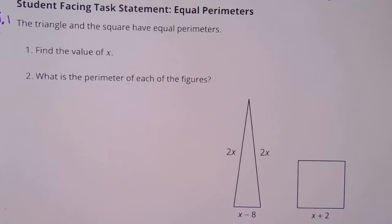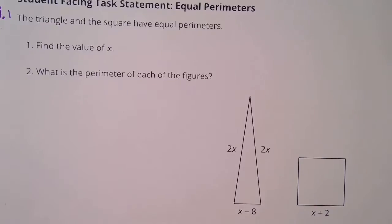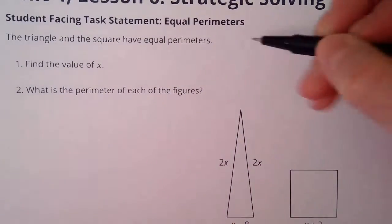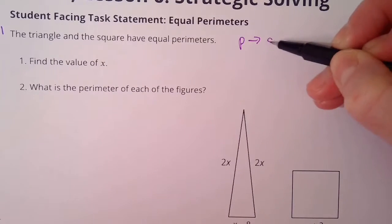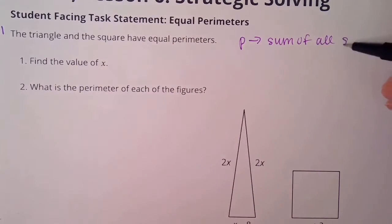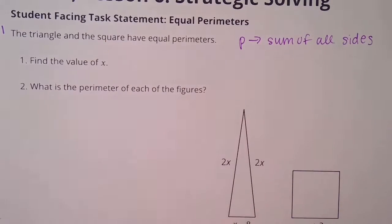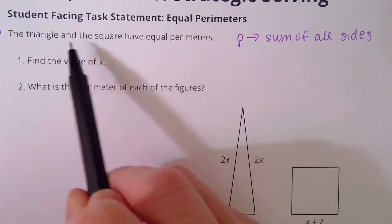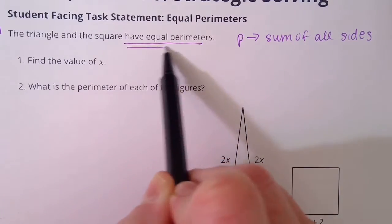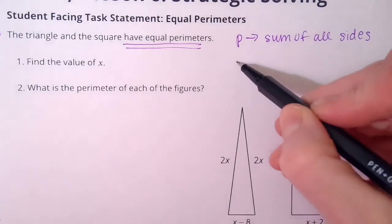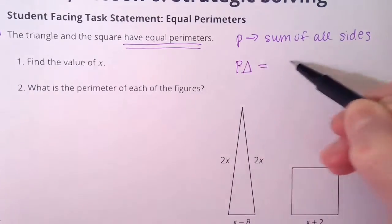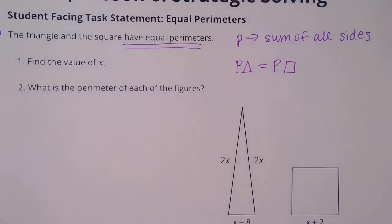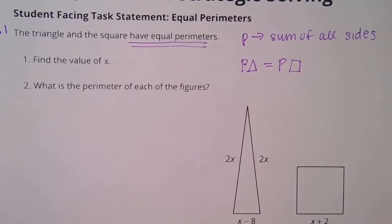So we have two tasks to complete here. Let's review perimeter. Perimeter is the sum of all sides — we add all of the sides up. It says that these two shapes have equal perimeters, so the perimeter of the triangle is equal to the perimeter of the square. That's important information because we need to find the value of x.